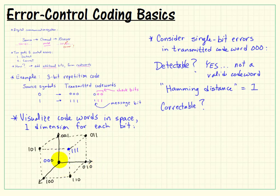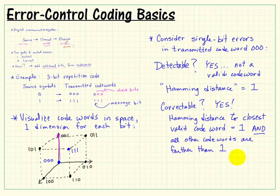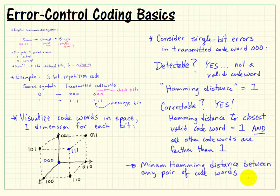Is this a correctable type of error? Let's consider this one again. We actually find that it is correctable because we see that 001 has the closest Hamming distance of 1 to the code word 000. And, this is important, all other valid code words are greater distance. So we see that 001 could be said to be closest to the nearest code word 000. So we say that the minimum Hamming distance between any pair of code words, which we call D sub min, for this particular 3-bit repetition code is 3.